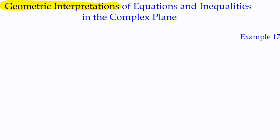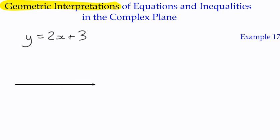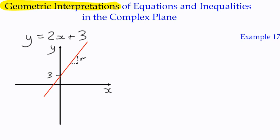For instance, if we have the equation y equals 2x plus 3, algebraically it's saying that two quantities x and y are connected such that the y value is two times the x value plus an extra 3. The geometric interpretation of that is a straight line with gradient 2 that passes through the y-axis at 3. That's the geometric interpretation of a linear function.